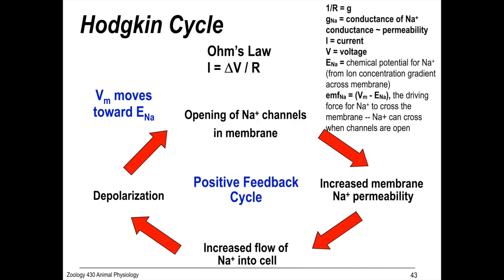And those are the important parameters. So, this is a positive feedback cycle that just perpetuates down the axon like falling dominoes down the axon.